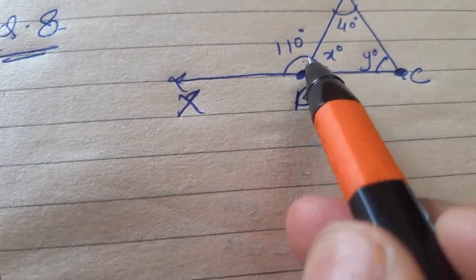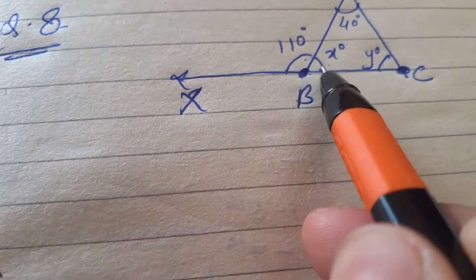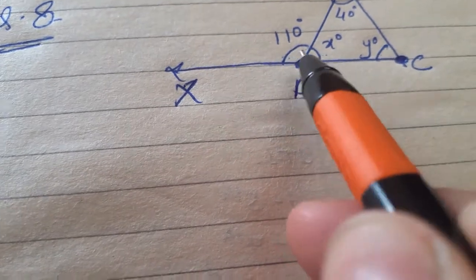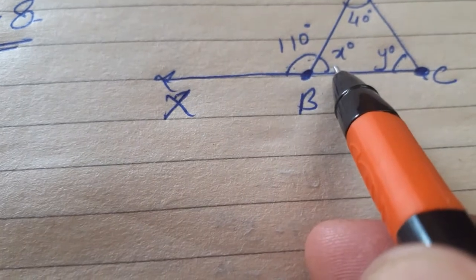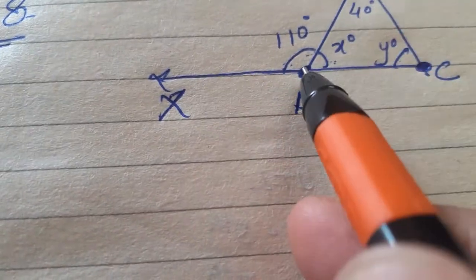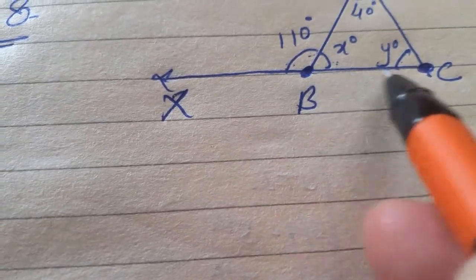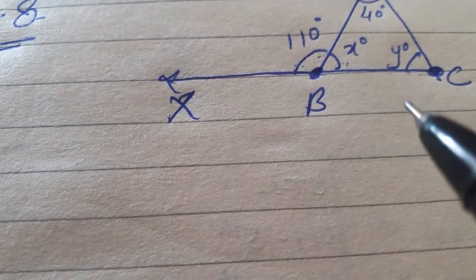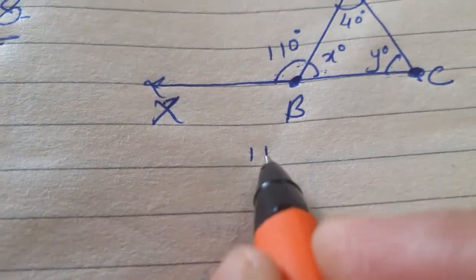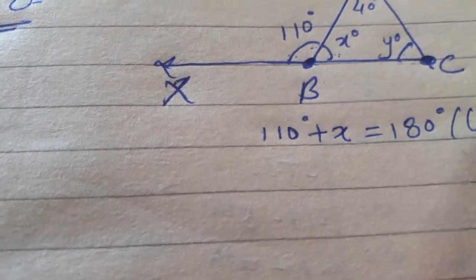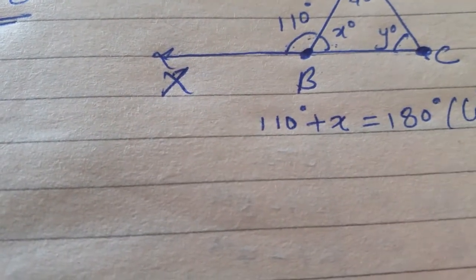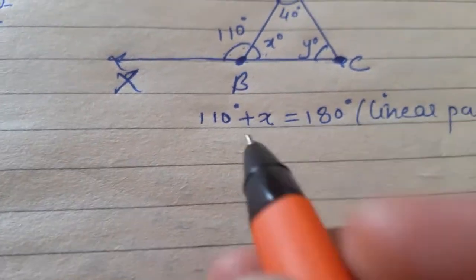So, you can see that the exterior angle and the adjacent angle, these are the linear pairs. This 110 degree adjacent angle is x degree, which has common arm, common vertex, and non-common arms are opposite sides. So, 110 degrees plus x is equal to 180 degrees. Why will this happen? Because these two are being a linear pair.